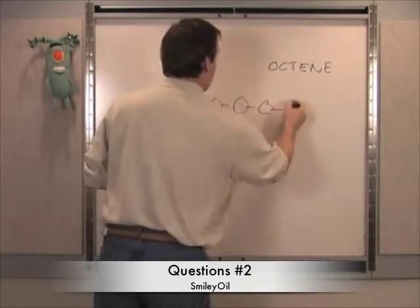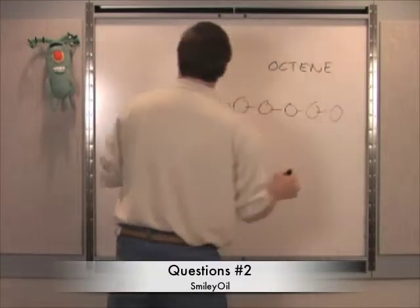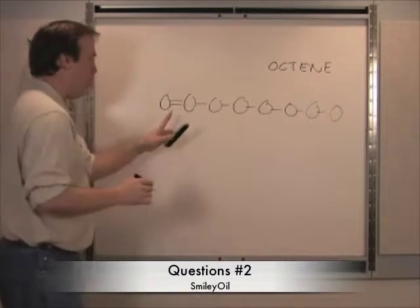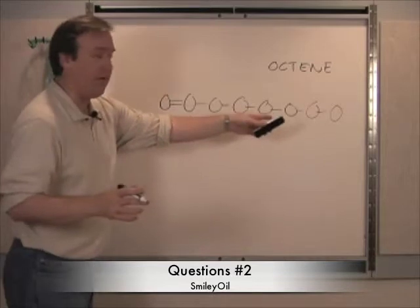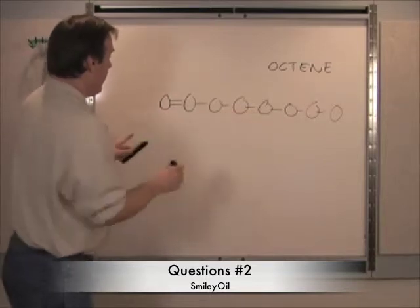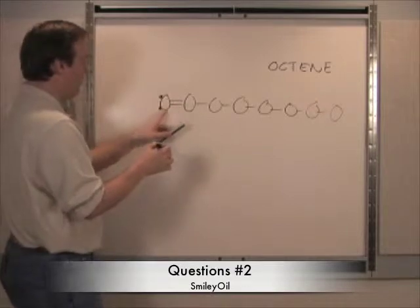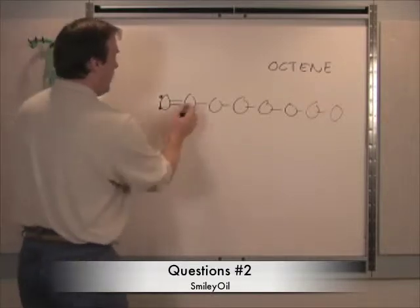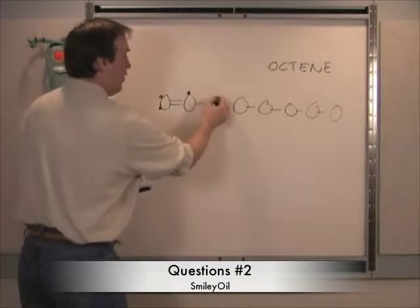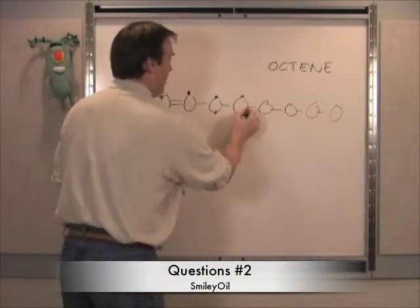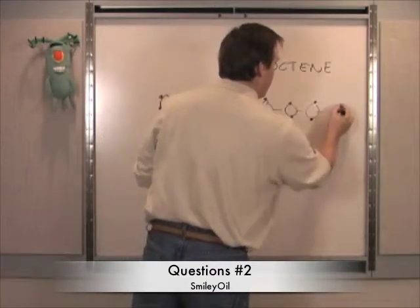Octene has one double bond and then the rest are very similar to octane. So this octene, one double bond. Now let's calculate the molecular formula of octene. We have to put two hydrogens on here because we need four, so we have two bonds and then two hydrogens. This one has three bonds so we put one hydrogen in, and then the rest is kind of like our good friend octane.